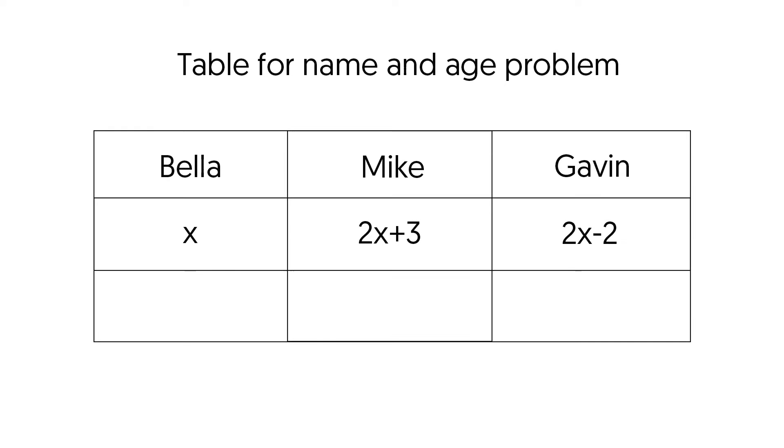Step two, let's put their age equations into our table. First, let's say Bella's age is x because her brother's ages depend on hers. So Bella is x years old. Mike is twice Bella's age plus three years. So let's do two times x plus three for Mike.